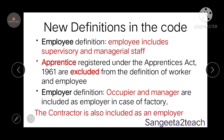Coming to new definitions in this code: the employee definition now includes supervisory and managerial staff. However, apprentices registered under the Apprentices Act 1961 are excluded — they were included before but are now excluded. In the definition of the employer, the occupier or manager are included as an employer in the case of a factory.